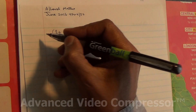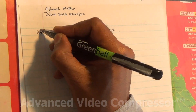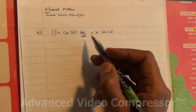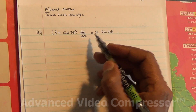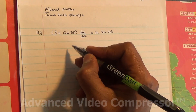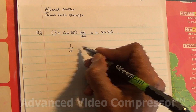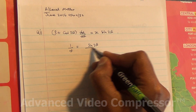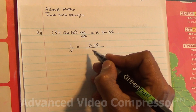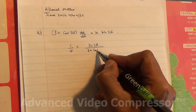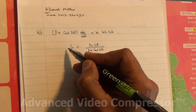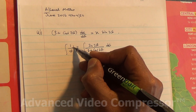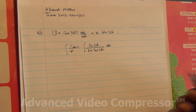Alright, question number 6. For the first part, we need to solve the differential equation. First, we're going to separate the variables. x is going to come on this side. Therefore, we're going to have 1/x = sin2θ / (3 + cos2θ). Then we're going to integrate each side with respect to their own variable.